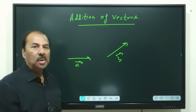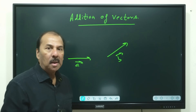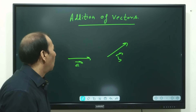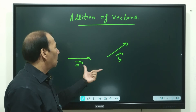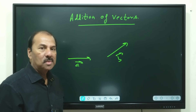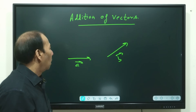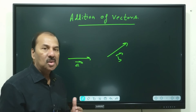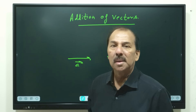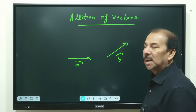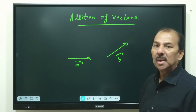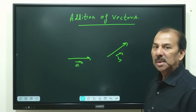They can be parallel to each other, they can be anti-parallel, or they can make some angle with respect to each other. We have vectors A as well as vector B. When we want to find the addition of these two vectors, it is also termed as the resultant of the vector.